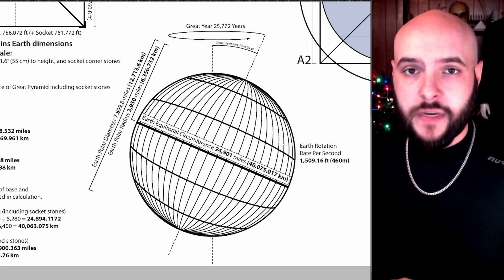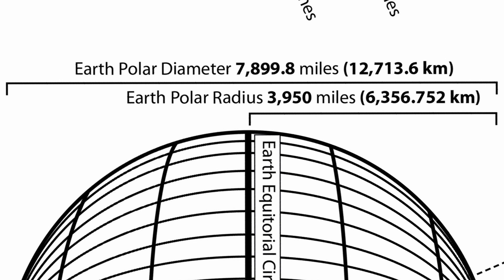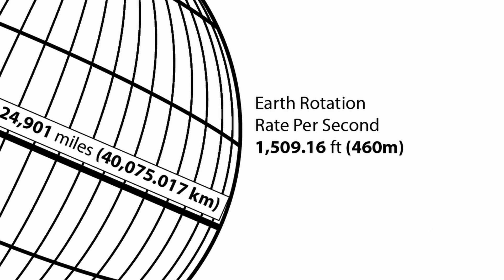Let's go over the Earth's dimensions real quick so you can get those numbers in your head. The equatorial circumference of the planet is 24,901 miles or 40,075.017 kilometers. Its polar diameter is 7,899.8 miles or 12,713.6 kilometers. Its polar radius is 3,950 miles or 6,356.752 kilometers. And the rotation rate of the planet per second on its axis is 1,509.16 feet or 460 meters per second.